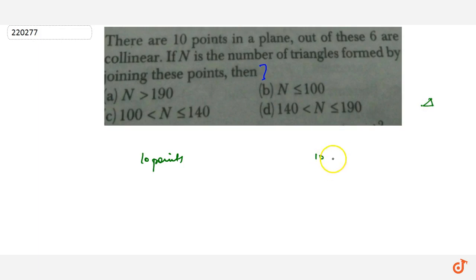The number of possible triangles from 10 points, we need to take total 3 points, but the condition is given that 6 points are collinear points.